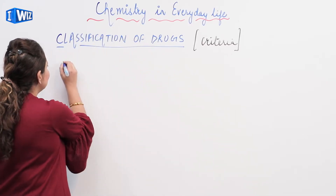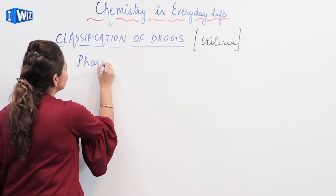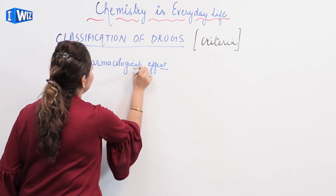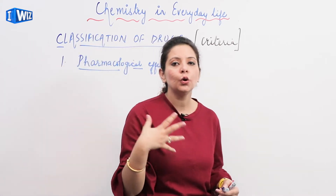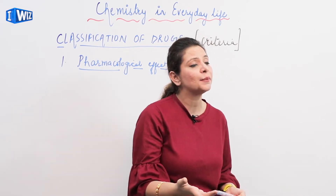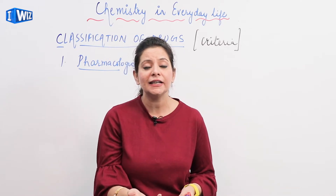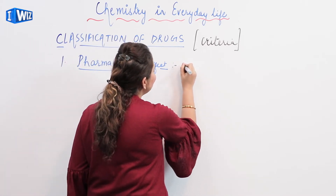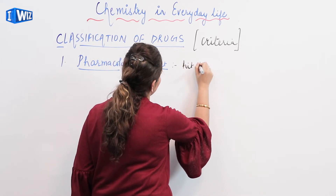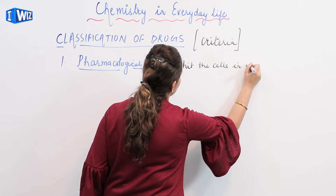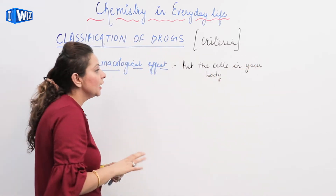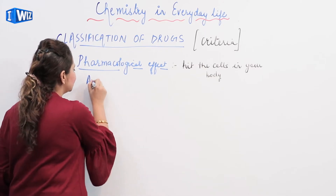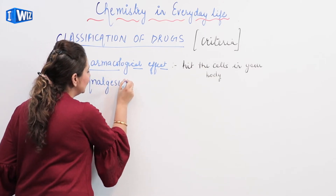Let us start with the classification. The first classification we have is pharmacological effect. We classify drugs on the basis of pharmacological effect — meaning, when you take this drug, how is it going to function in your body, how will it cure a disease, and how is it going to hit the cells in your body. For example, we have a category called analgesics.